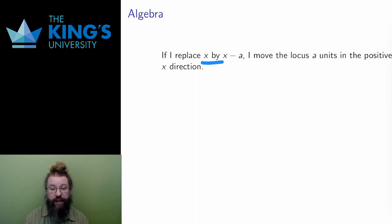If, in the equation of a locus, I replace x by x minus a, then I've subtracted a in the equation. To balance this, I need to move in the positive x direction. Therefore, the locus is shifted by a units in the positive x direction.